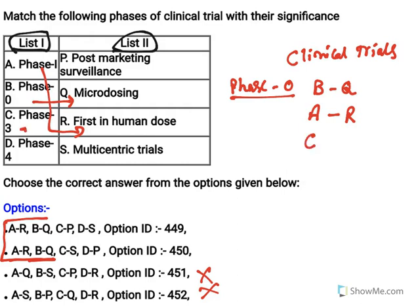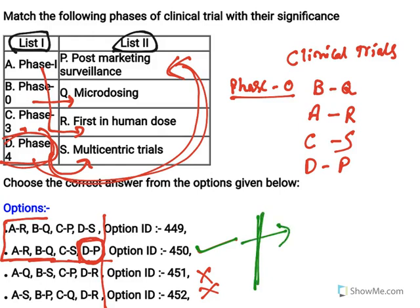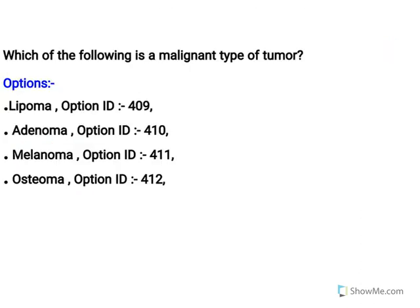Phase three is multi-centric trials (C option) and phase four is post-marketing surveillance (D is P). Most students know phase four as post-marketing surveillance, and only one option among all choices has this correct combination. So even if you don't know about phase zero and micro-dosing, knowing post-marketing surveillance lets you get the correct answer.